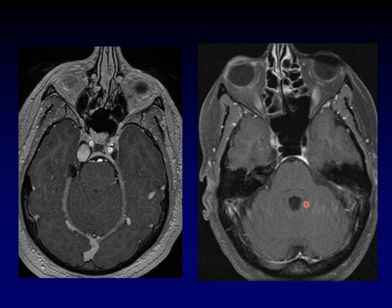Now let's look at patient two. In this mass, Meckel's cave is spared. This mass is anterior to Meckel's cave, not inside Meckel's cave, and it looks like it's pushing the internal carotid artery more posteriorly. So this is more anterior and more medial than the first one.